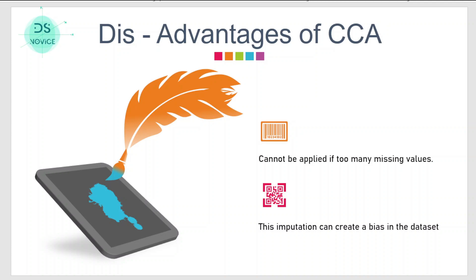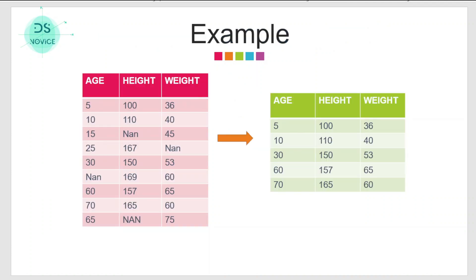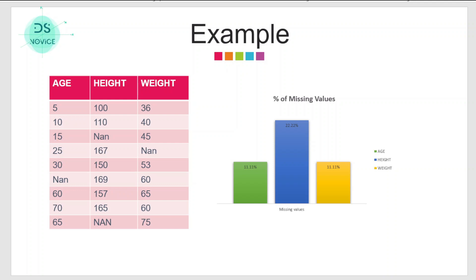Let's try to understand how this technique can cause problems. Here we have the data set and it contains some missing values in all the columns. If we apply this technique we have the data which does not have missing values. We have applied this technique without giving much thought so far, so good. Now let's do some analysis. If we try to find out the percentage of missing values in each column, we see that there is 11 percent missing values in height column and 11 percent missing values in weight column.